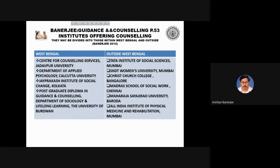Institutes offering training may be divided into those within West Bengal and those outside. In West Bengal: Centre for Counselling Services, Jadavpur University; Department of Applied Psychology, Calcutta University; Jai Prakas Institute of Social Change, Kolkata; Postgraduate Diploma in Guidance and Counselling, Department of Sociology and Lifelong Learning, University of Burdwan. Outside West Bengal: Tata Institute of Social Sciences, Mumbai; SNDT Women's University, Mumbai; Christchurch College, Bangalore; Madras School of Social Work, Chennai; Maharaja Sayajirao University, Baroda; and All India Institute of Physical Medicine and Rehabilitation.